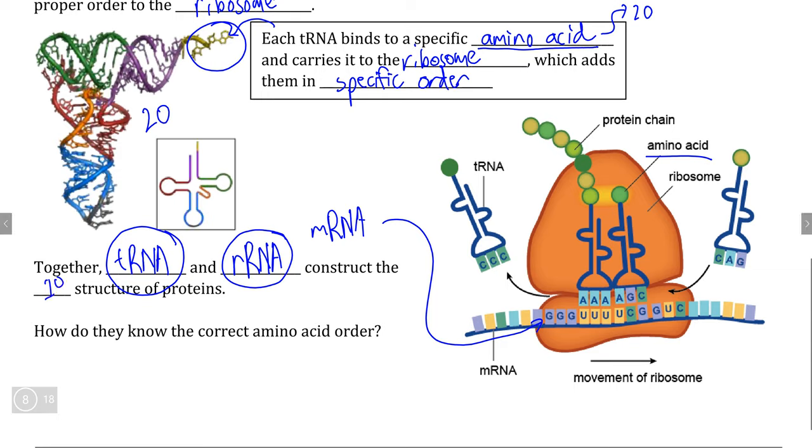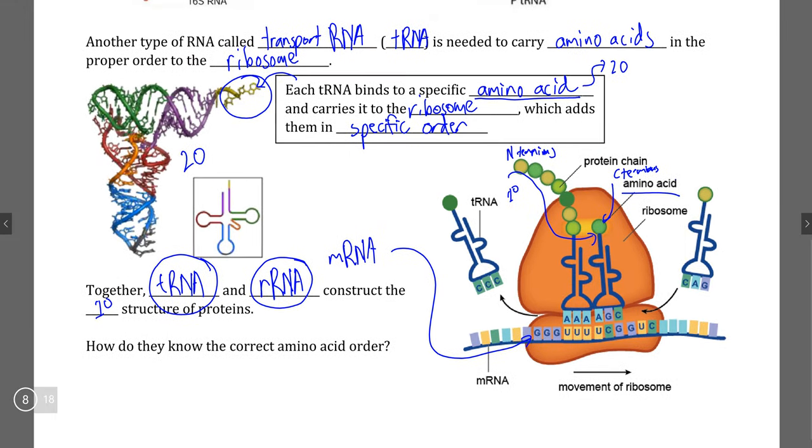Because here we can see that if this is the N-terminus of the protein and the C-terminus is here, we can see when we read this sequence of amino acids, we have a primary structure that is being assembled here. But again, this requires all three forms of RNA to work together in order to produce this structure.